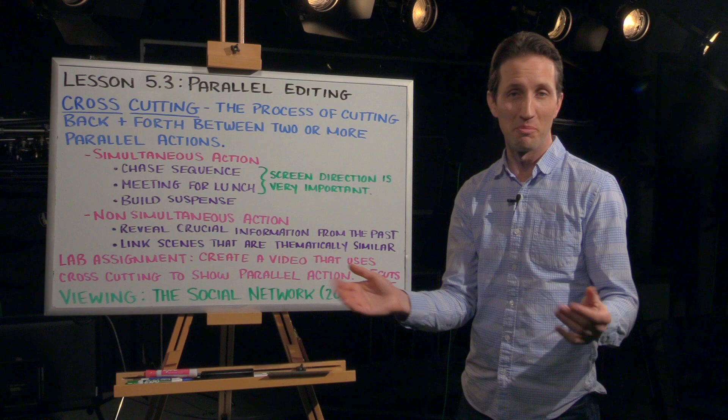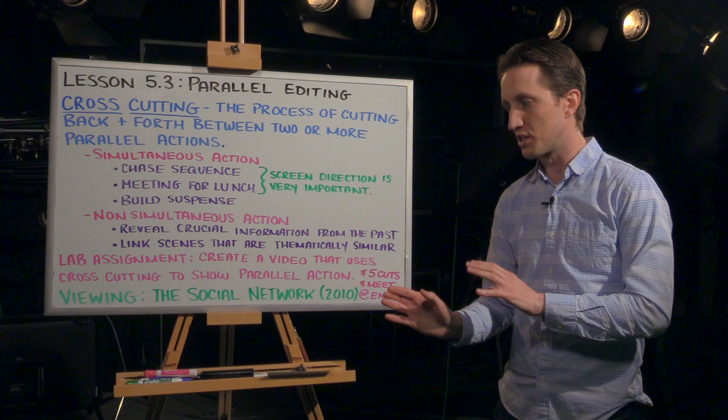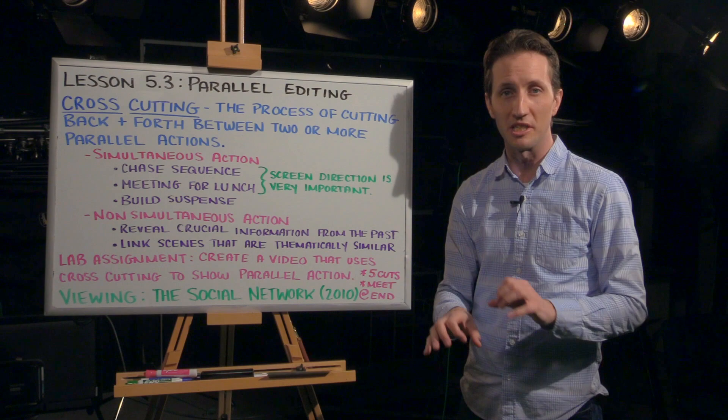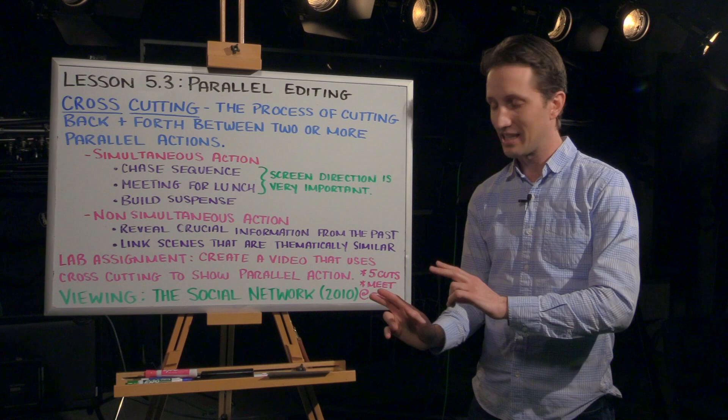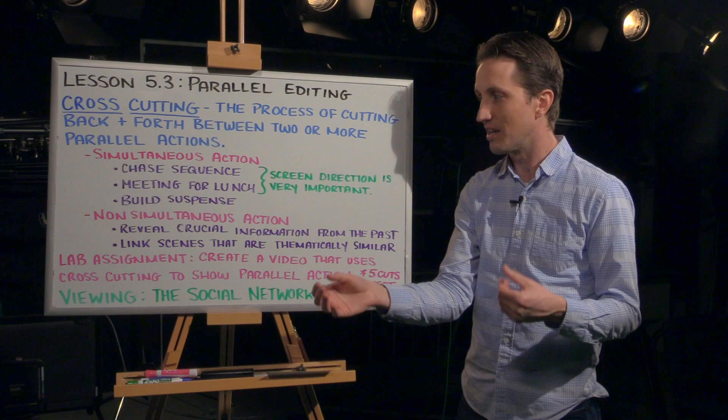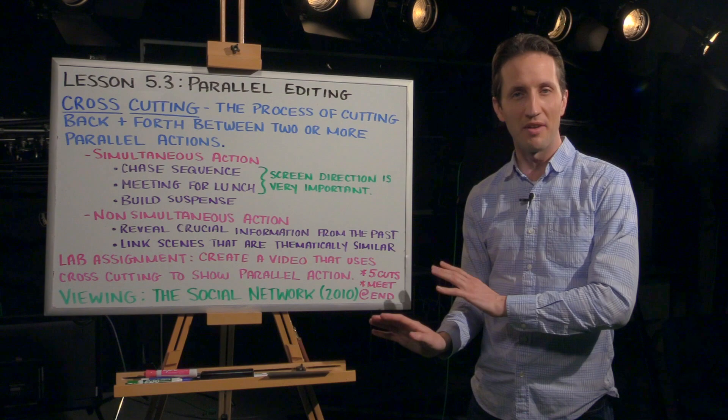Your lab assignment for this week is to create a video that uses cross-cutting to show parallel action. This can be a chase sequence, two characters meeting for lunch, or a scene designed to build suspense. All I want to see is at least five cuts, and at the end of your video, the two characters — character A and character B — have to meet. If they're chasing each other, then A catches B. If they're meeting for lunch, then they meet for lunch. Five cuts, characters meet at the end — that's the requirement.